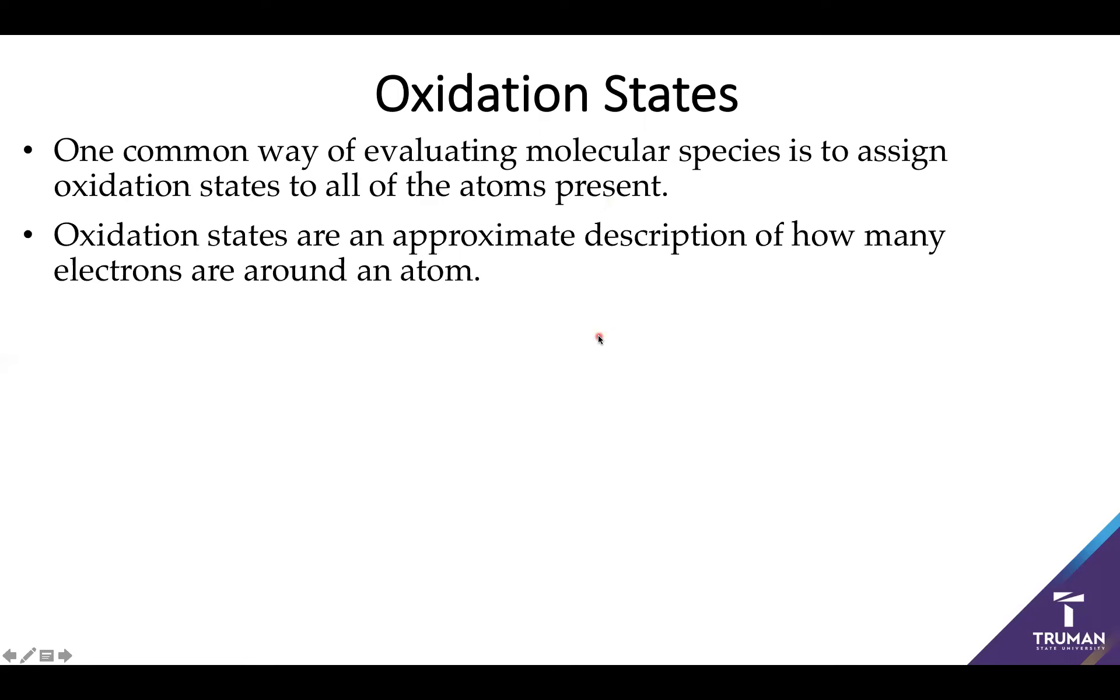It looks at each individual atom and says, approximately how many electrons are on this atom and how many electrons are on that atom? So this is actually fairly simple for when we're looking at atomic ions, so things like sodium or chlorine. So with sodium, it's got a plus charge. So the oxidation state is plus one. It's missing an electron.